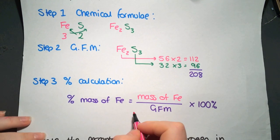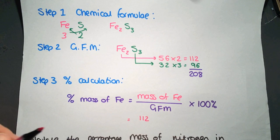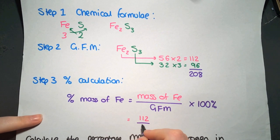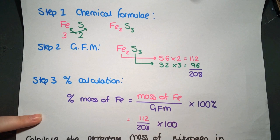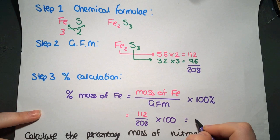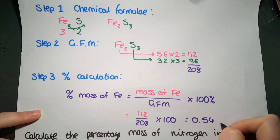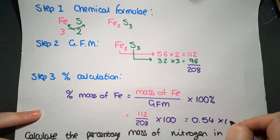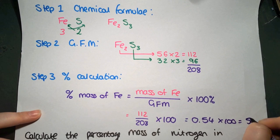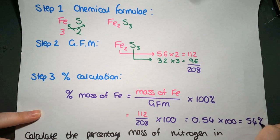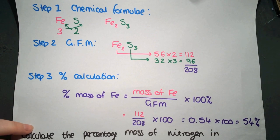So for this we have 112 divided by 208, all times by 100, which gives us 0.54 when rounded up, times 100, which equals 54% of our compound being iron.